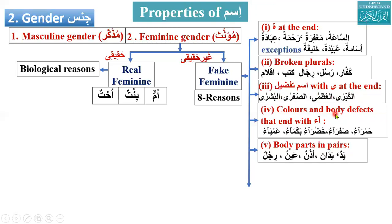The fourth type is colors and body defects that end with alif maqsura or alif mamduda. Colors and body defects ending with alif mamduda are feminine, like hamra'u (red), safra'u (yellow), khadra'u (green), bakma'u (mute, a body defect), and 'amya'u (blind). These are all considered feminine gender.